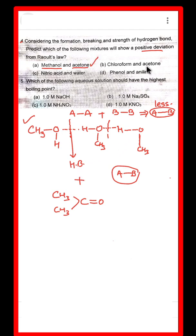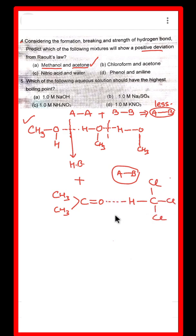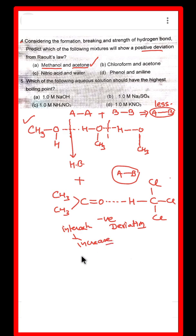For the other option, chloroform (CHCl3) and acetone: when these are mixed, hydrogen bonding interactions increase, so the vapor pressure decreases. This means chloroform and acetone show negative deviation from Raoult's Law.